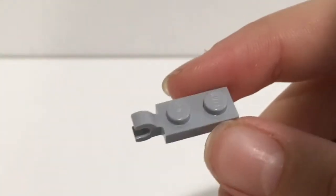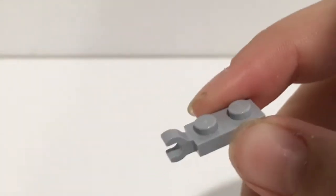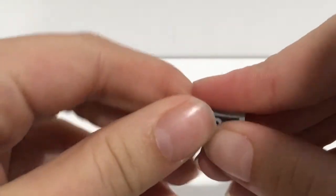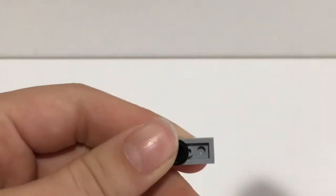You're gonna start off the build with one of these light gray clips and then take some black studs and clip them on the bottom part here.